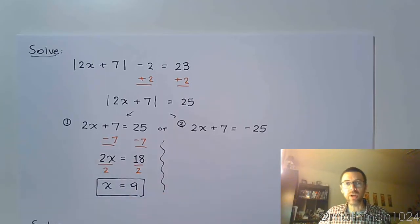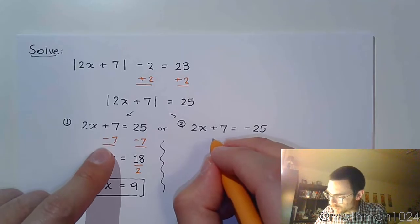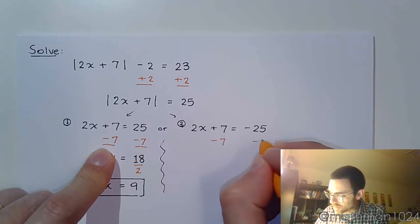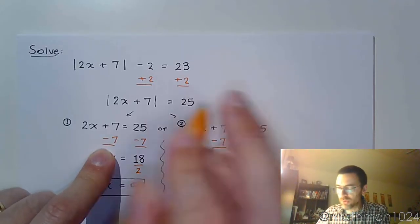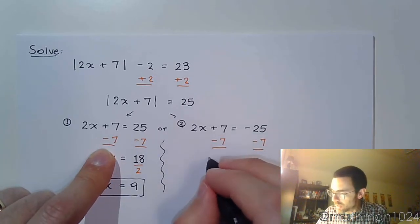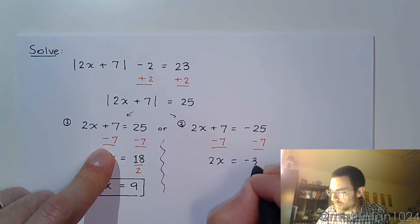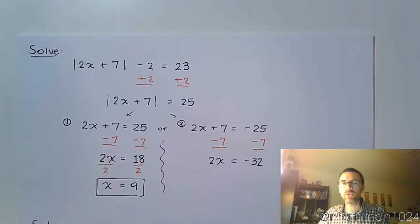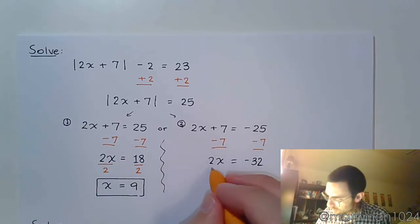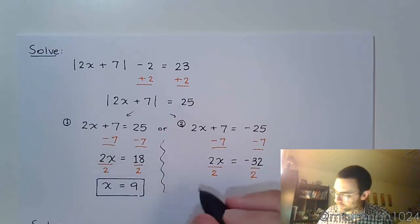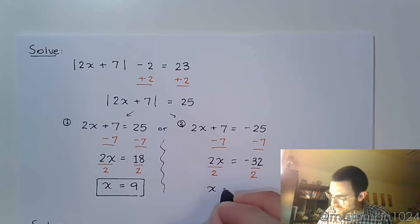But let's not forget about the other solution. Notice I'm going to take the same steps that I took over here, subtract 7 and subtract 7. Even though the steps I'm taking are the same, my solution is going to be different because I'm starting with a different number on the right side. So 2x equals negative 32, divide both sides by 2, and x equals negative 16.